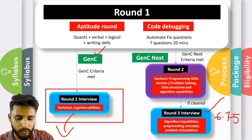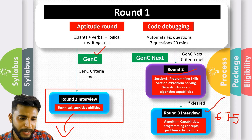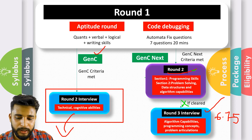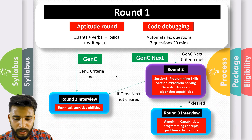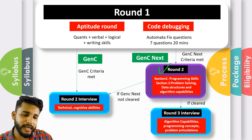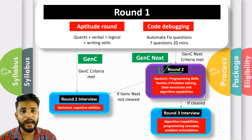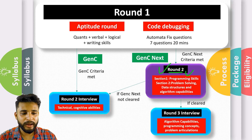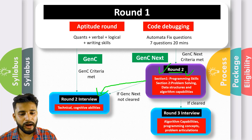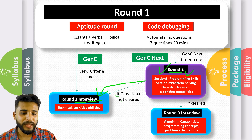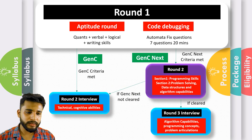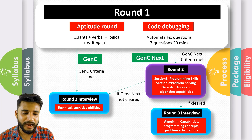In case you were in the Gen C Next round two but unfortunately could not clear it, you have an advantage — a lifeline. If you are rejected in Gen C Next round two, you will get one more chance to give the Gen C interview round. So if Gen C Next is not cleared, you will still get an interview for the Gen C package. This is a basic overview of the rounds and their structure.